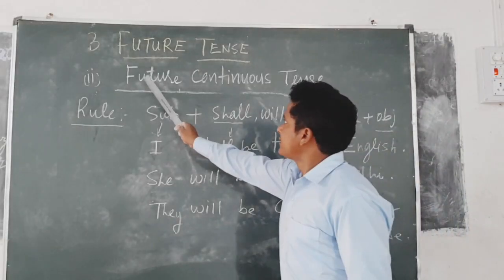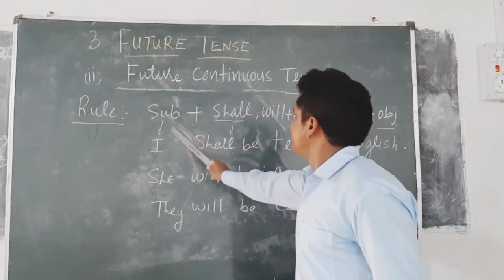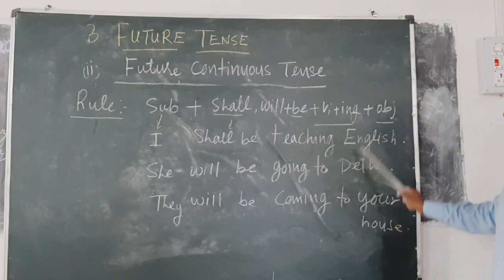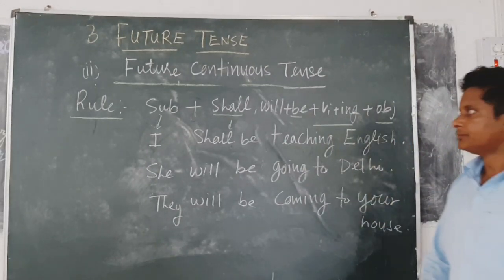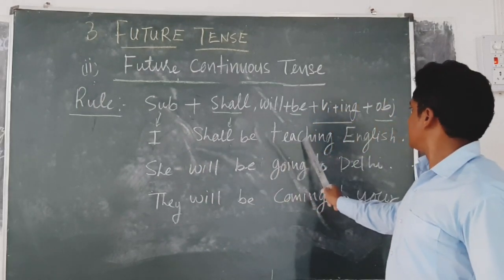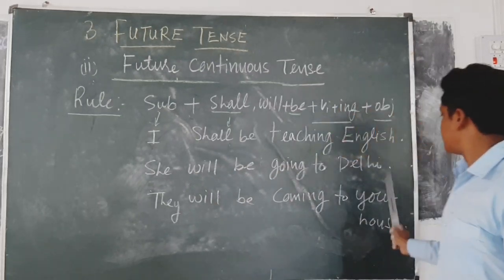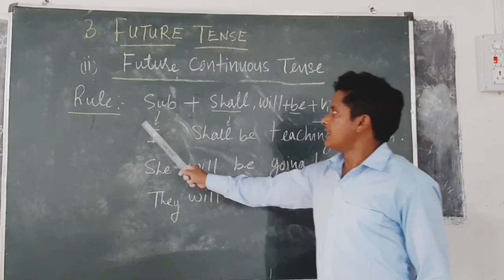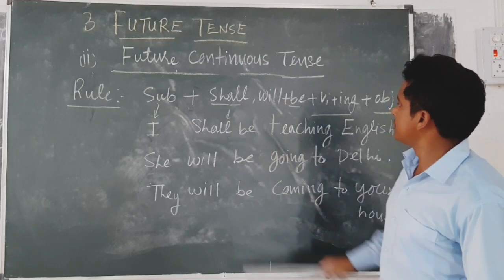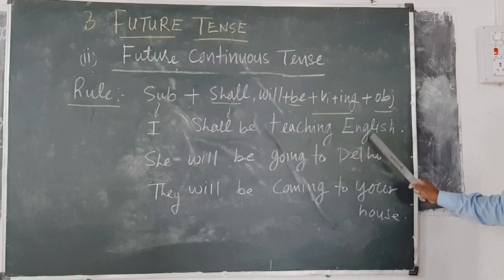Second one is future continuous tense. The rule of future continuous tense is: subject plus shall/will plus be plus verb plus ing plus object. Examples are: I shall be teaching English, she will be going to Delhi, they will be coming to your house. In the first sentence, subject is I, with I we use shall, then shall be, then verb plus ing is teaching, and object is English.